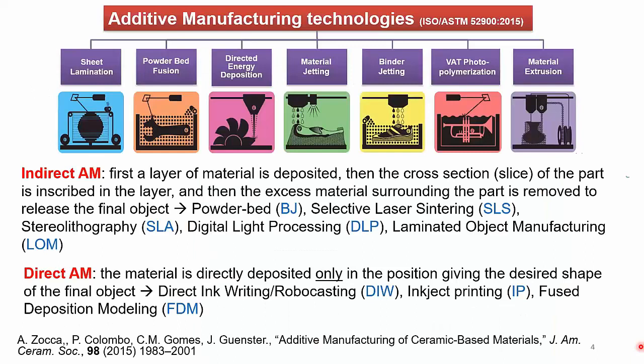These technologies have been regulated under the ISO/ASTM standard, which is still currently being revised and becoming more complicated. The advantage of this standard is that it divides additive manufacturing technologies into seven different categories: sheet lamination, powder bed fusion, directed energy deposition, material jetting, binder jetting, VAT photopolymerization, and material extrusion.